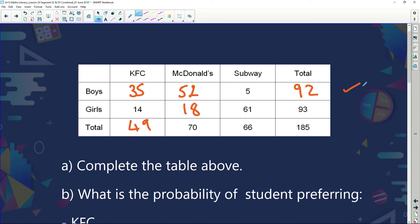So we add up to check our totals. 35, 52, and 5 is indeed 92. 14, 18, and 61 is indeed 93. 49, 70, and 66, 185. 35 and 14, 49. 52 and 18, 70. 5 and 61, 66. 92 and 93, 185. Our table is right. Now let's read the questions.